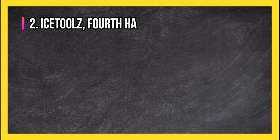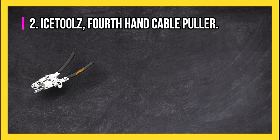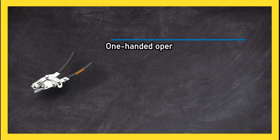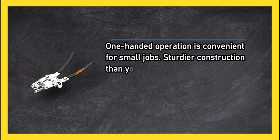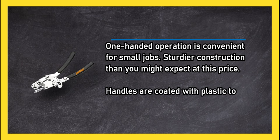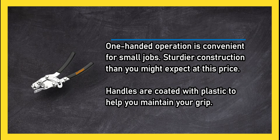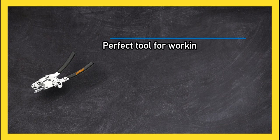At number 2, Ice tools fourth-hand cable puller. One-handed operation is convenient for small jobs. Sturdier construction than you might expect at this price. Handles are coated with plastic to help you maintain your grip. Perfect tool for working on brake lines, preventing fraying.